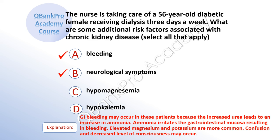The correct answer is A: bleeding, and B: neurological symptoms. Explanation: GI bleeding may occur in patients because the increased urea level leads to an increase in ammonia. Ammonia irritates the gastrointestinal mucosa, resulting in bleeding. Elevated magnesium and potassium are more common. Confusion and decreased level of consciousness may occur.